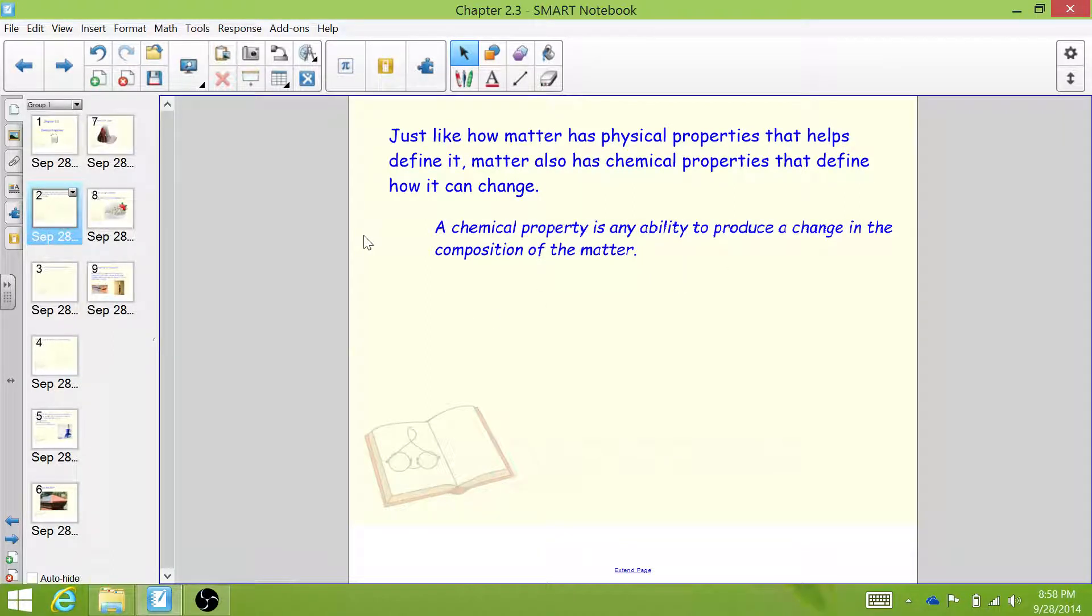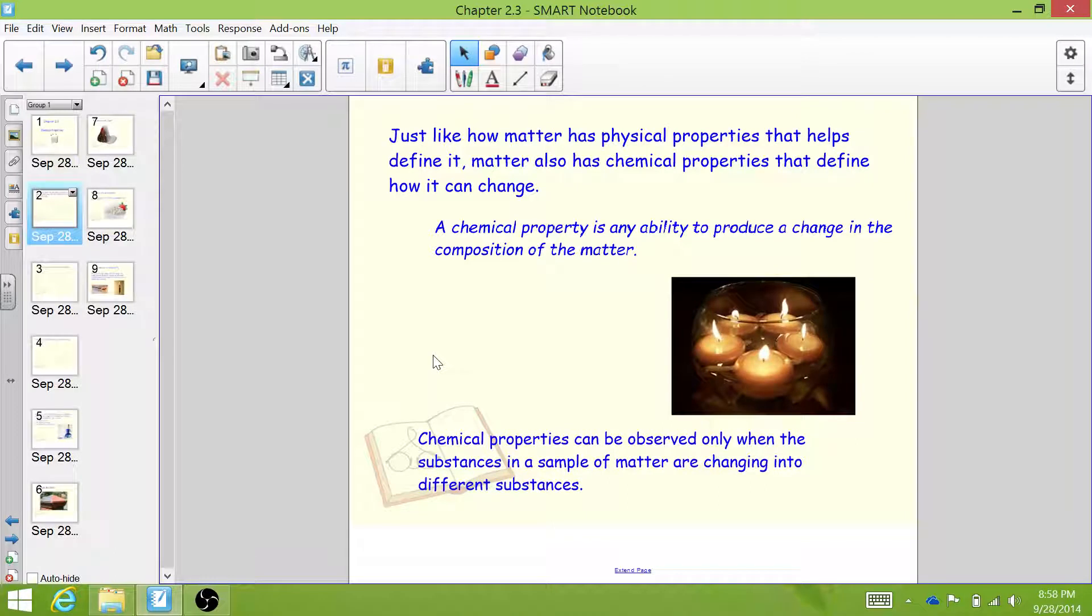A chemical property is any ability to produce a change in the composition of matter. Chemical properties can be observed only when the substances in a sample of matter are changing into different substances.